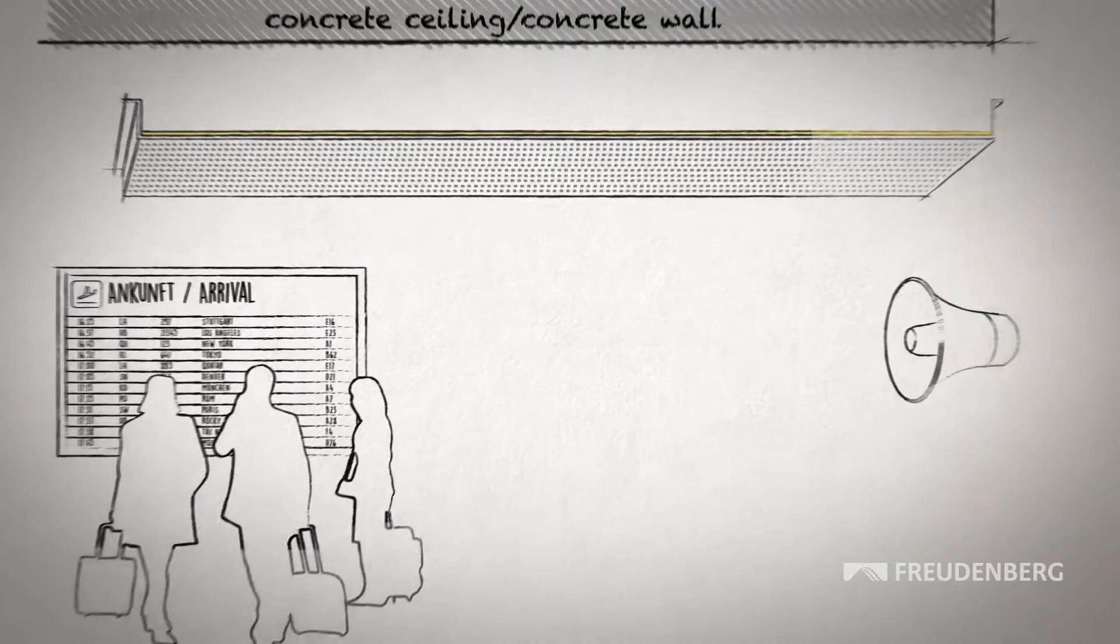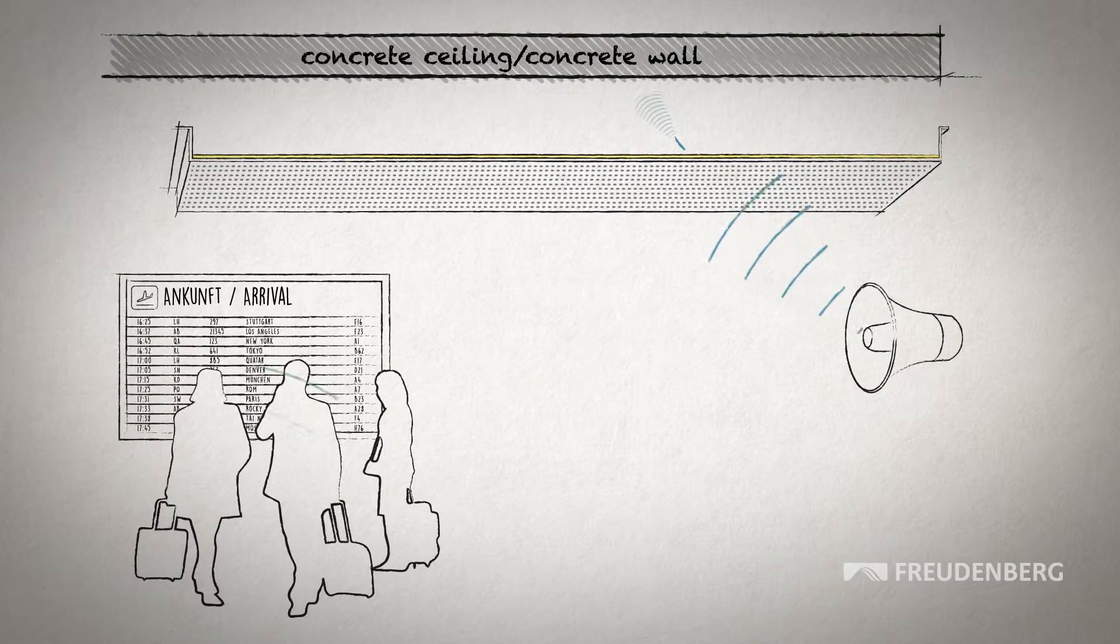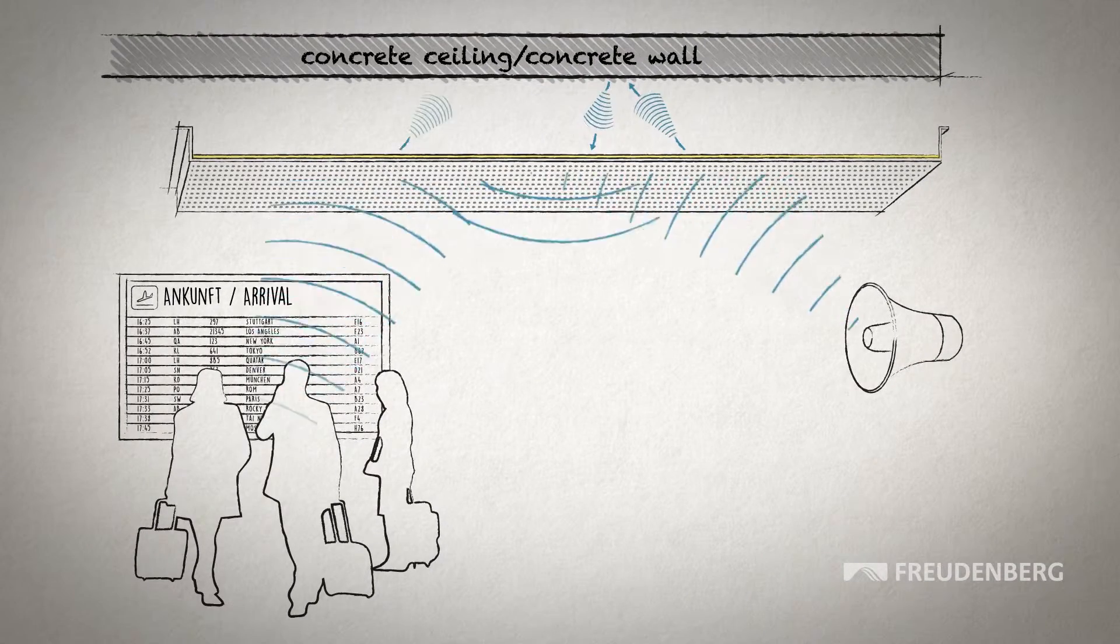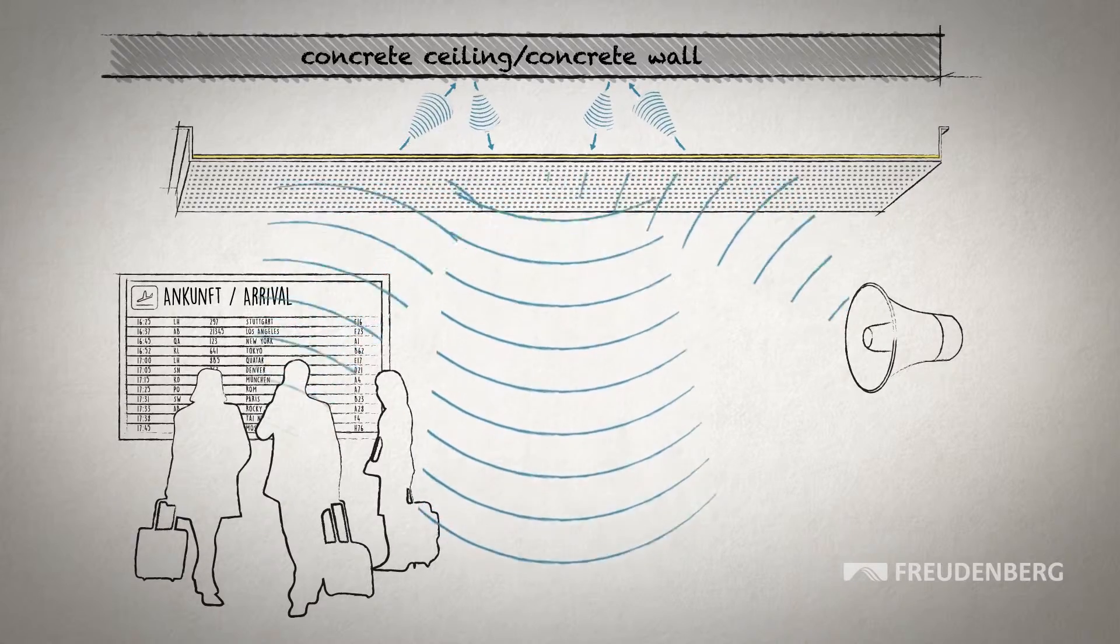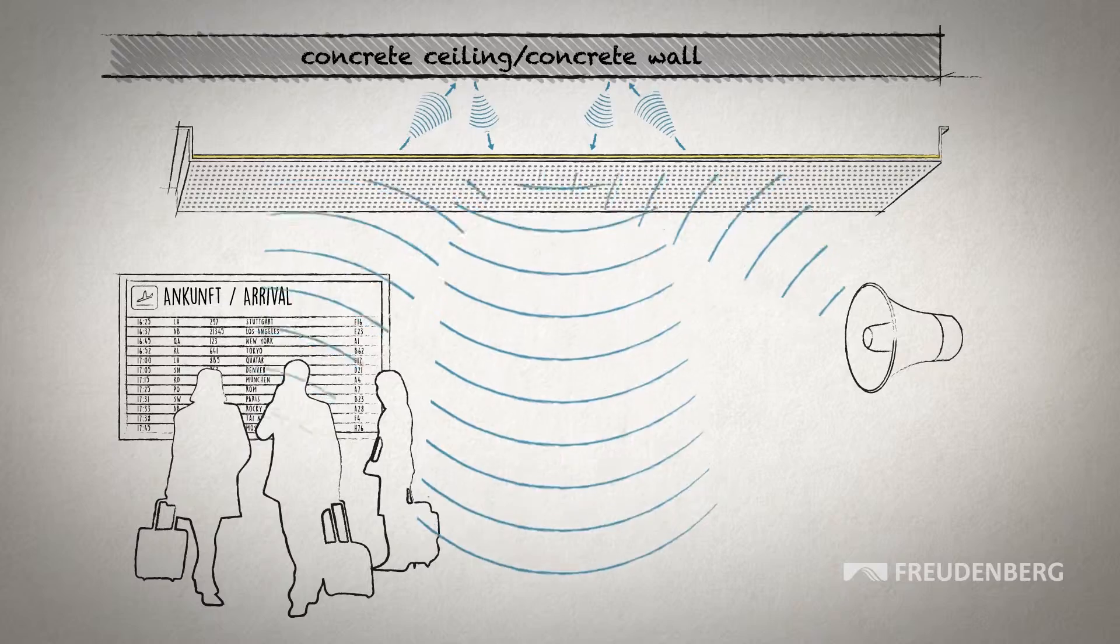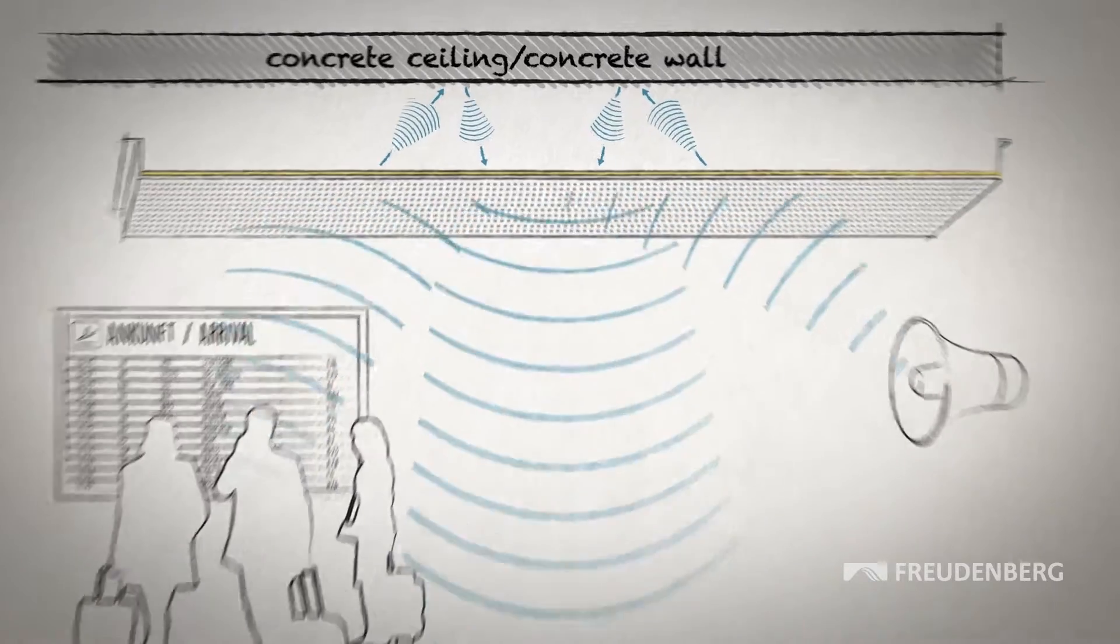But how does this acoustic non-woven achieve its results? In simple mechanics, when sound waves encounter a perforated panel, most are reflected. Exactly how many depends on the number and spacing of the holes.